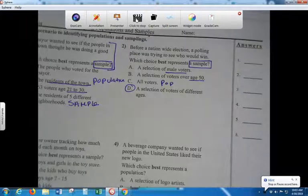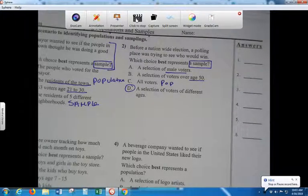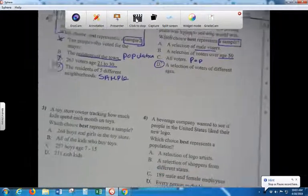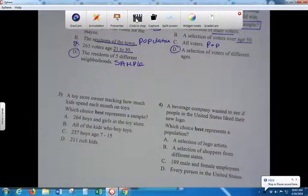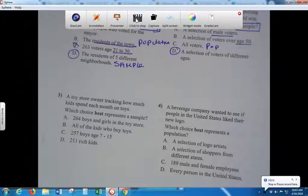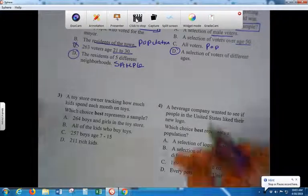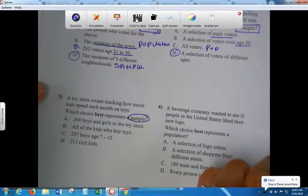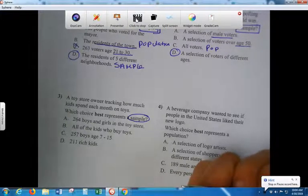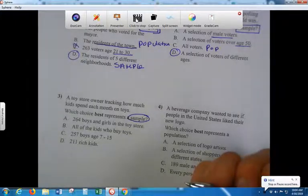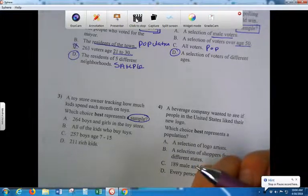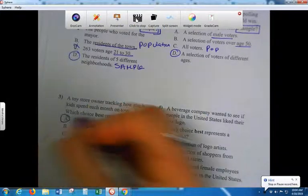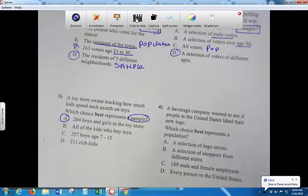Three. A store owner tracking how much kids spend each month on toys. Which choice best represents a sample? So correct answer is A. Right. Yep, boys and girls were good and they're in the store so it's good. Okay, number four.